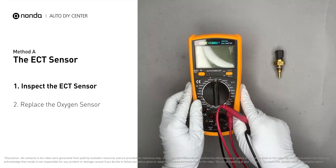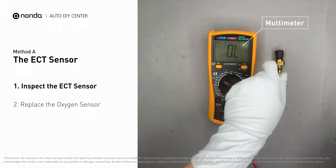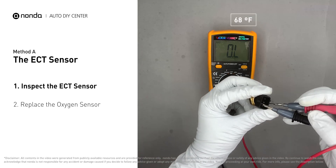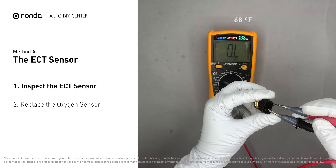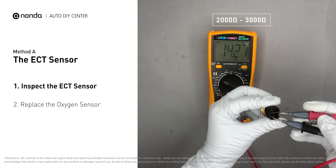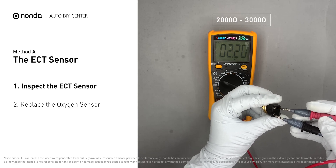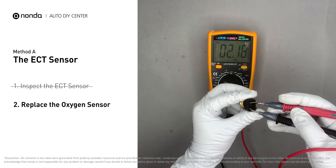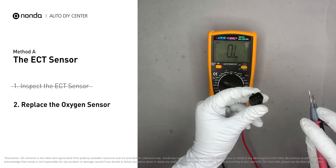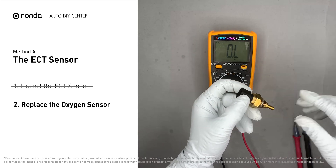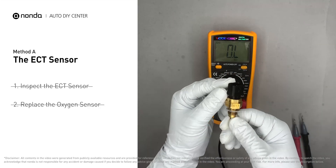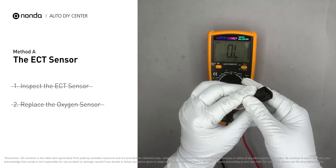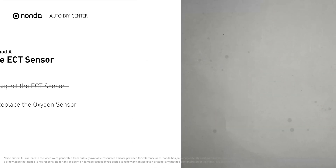Use a multimeter to proceed with a test on the ECT sensor. At an ambient temperature of 68 degrees Fahrenheit, the sensor resistance is between 2000 ohms to 3000 ohms. If you do not get a reading, this indicates that the ECT sensor is faulty and needs to be replaced. However, if the ECT sensor has a correct reading, then we will proceed with Method B.